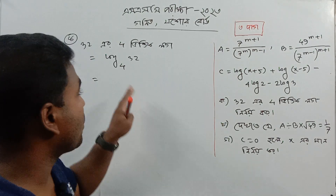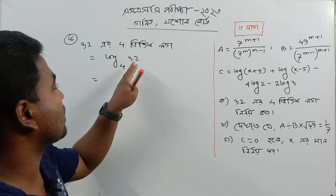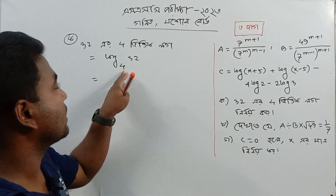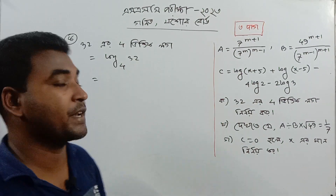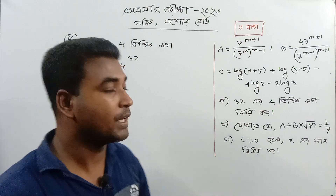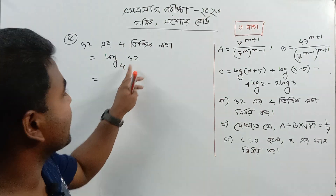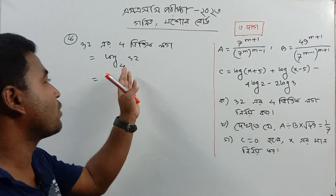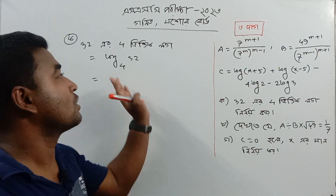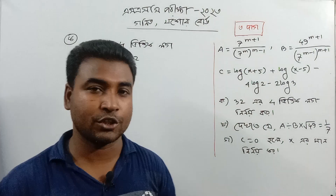That means the power raised to the power is equal to 3. If base 4 is equal to 3, then the problem is that the power raised to the power is equal to 3.